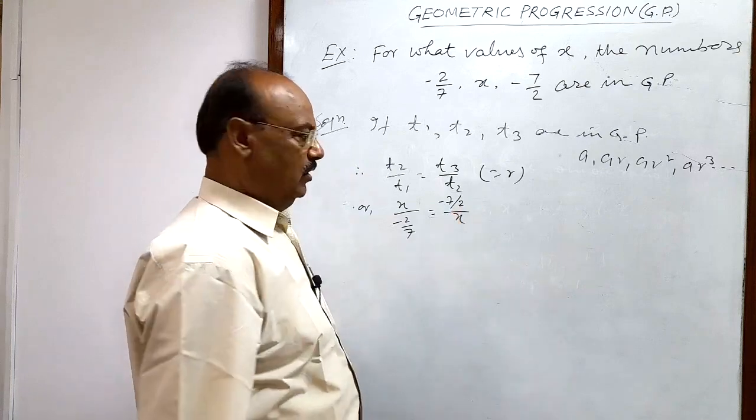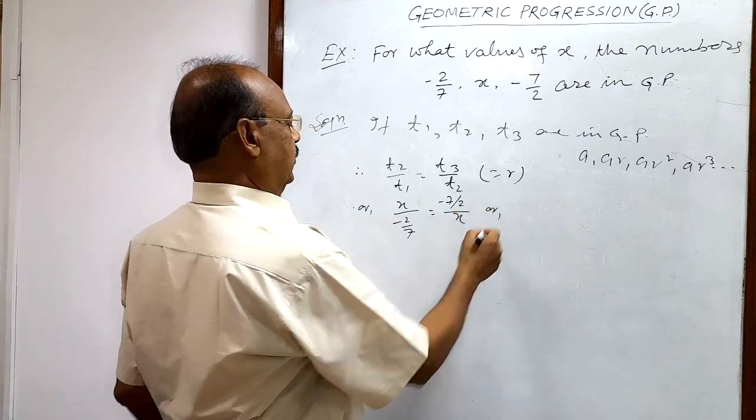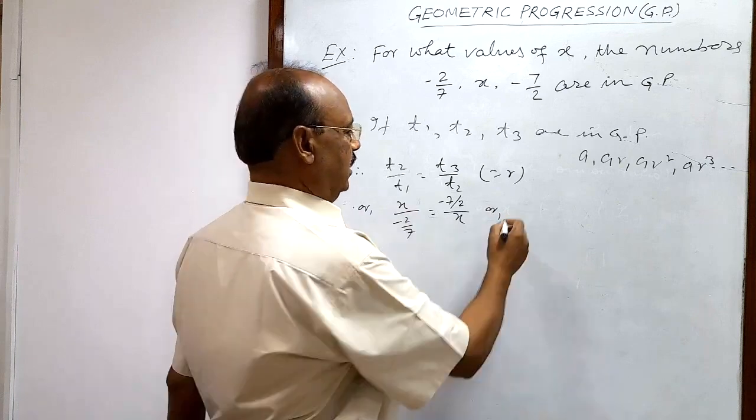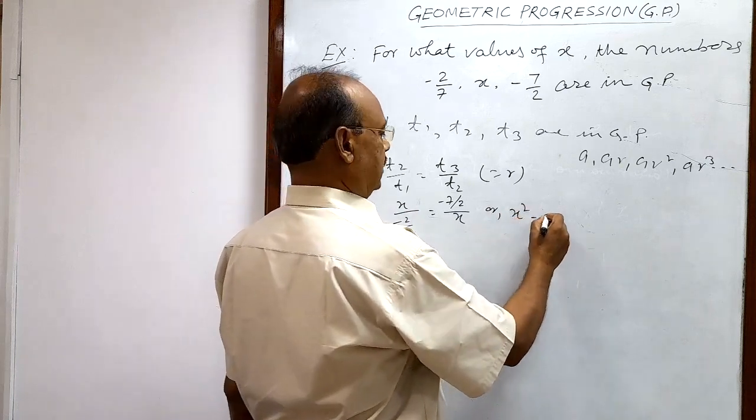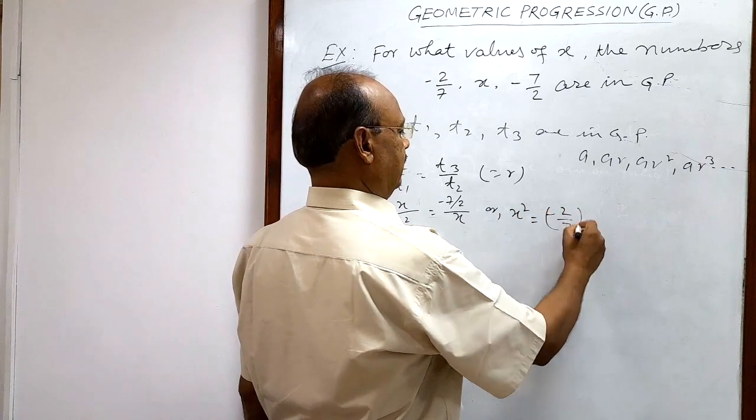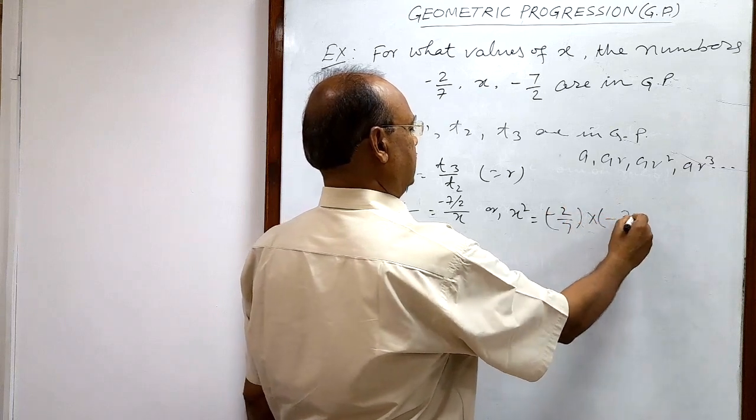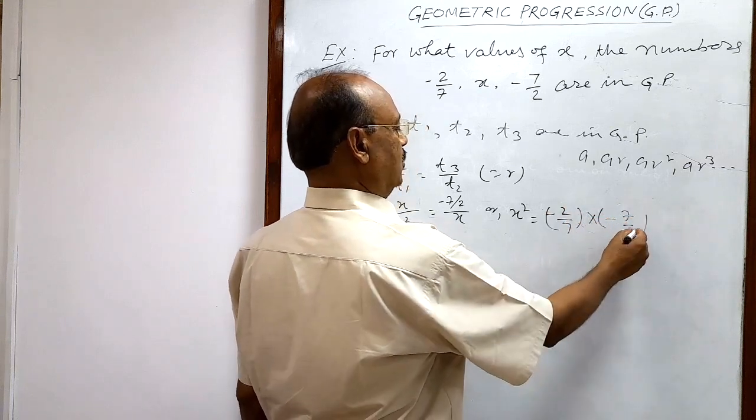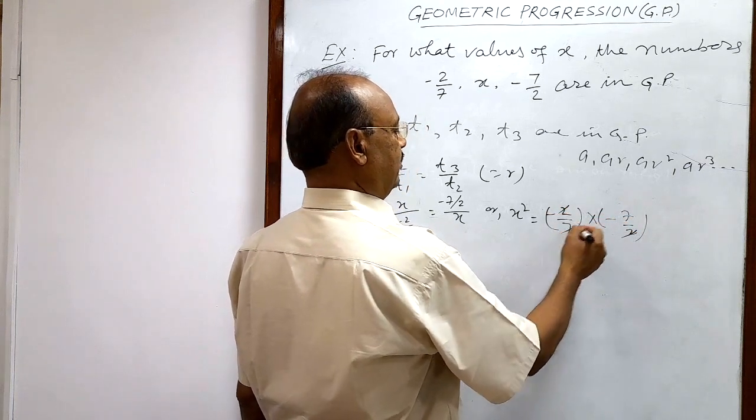By cross multiplication we can write x squared is equal to minus 2 by 7 times minus 7 by 2. This 2 will be cancelled out, 7 will be cancelled out.